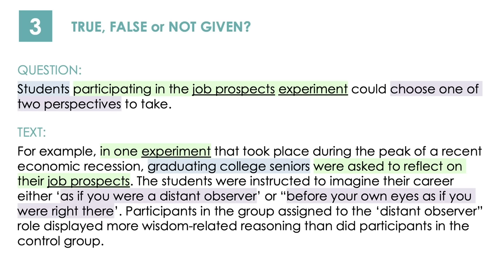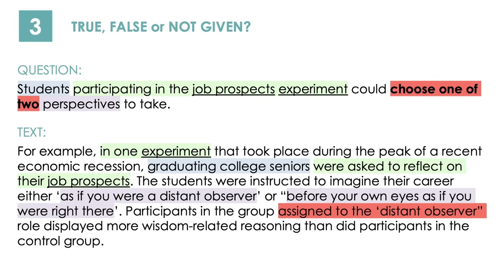Continuing: 'Students were instructed to imagine their career either as if they were a distant observer or before their own eyes as if they were right there.' So those are the two perspectives. The question says they could choose one of them. But then: 'Participants in the group assigned to the distant observer...' — they were assigned to this group. This means they were allocated — they couldn't choose. So this is a direct contradiction and the answer is false.